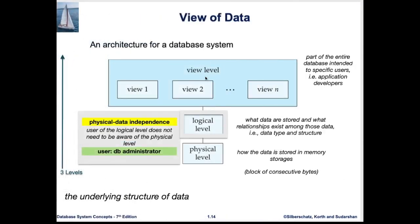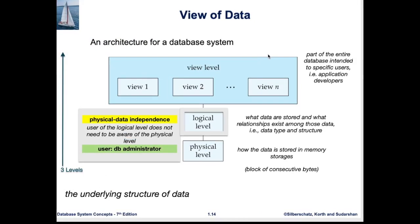The next topic is the view of data. It explains the structure of data in three levels. The physical level is the lowest level — it describes how data is stored in memory storage, the actual physical location of the data, such as a block of consecutive bytes on a specific hard disk. The logical level is an abstraction that explains what data are stored and what relationships exist among those data.